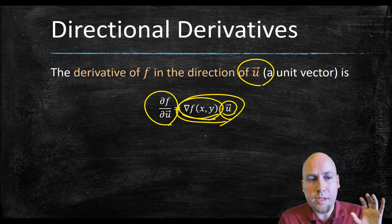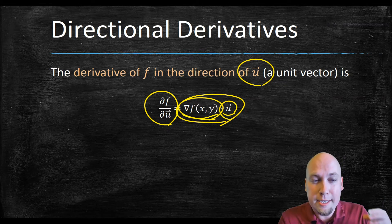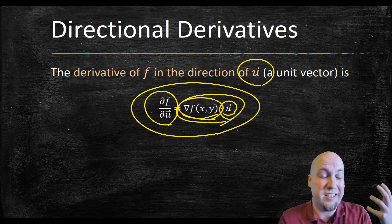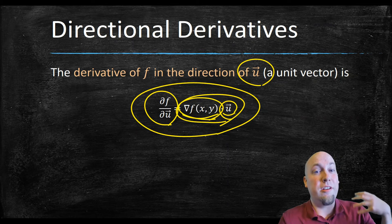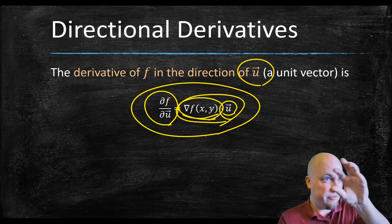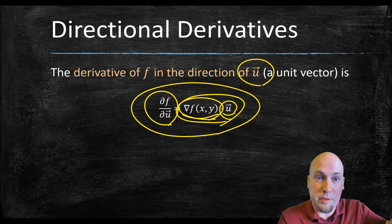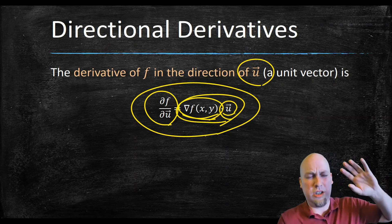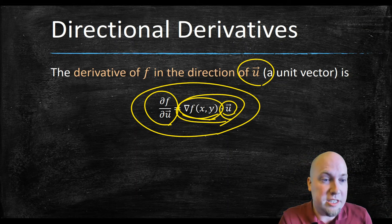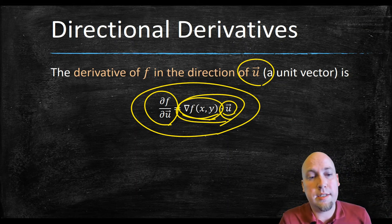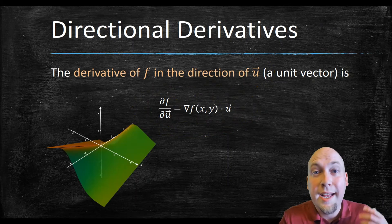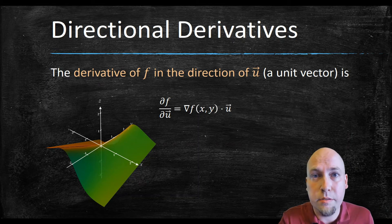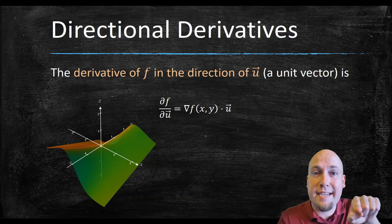This is actually a theorem, not the definition. The directional derivative is defined via a limit as h goes to zero, just like all other derivatives. The theorem says we don't have to use limits to compute it — we can use gradients and dot products instead. As a sanity check: if the unit vector is (1, 0) pointing along the x-axis, the dot product just picks off the first entry of the gradient, which is the x partial derivative. That makes sense — both measure the rate of change in the x direction.